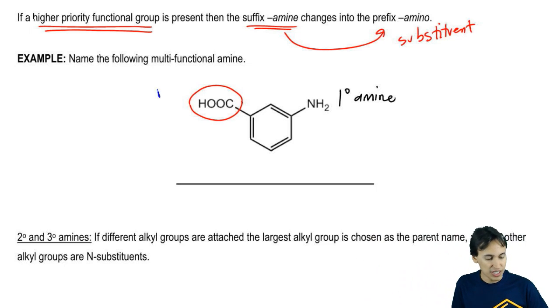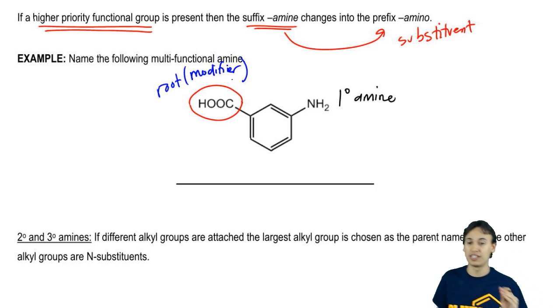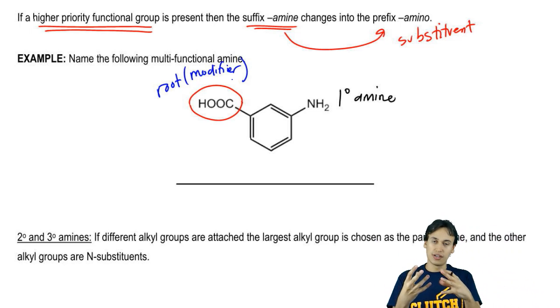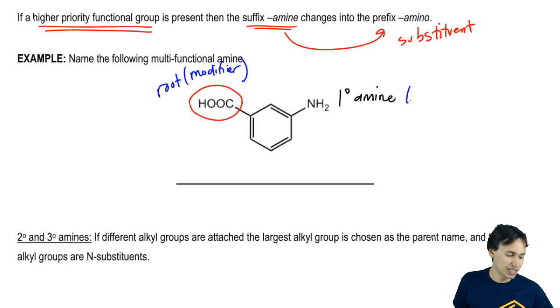That means that now this is your root. This is your modifier. Remember that we keep referring to a modifier as anything that changes the parent chain name. The amine is now going to be the substituent.